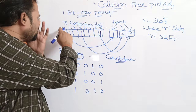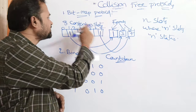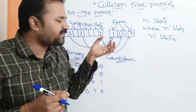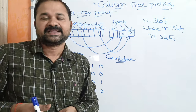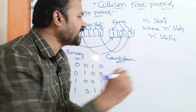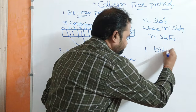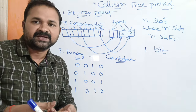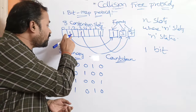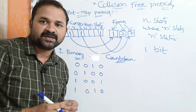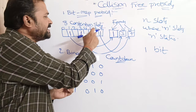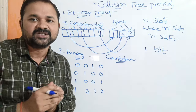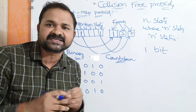The numbering is from 0 to n minus 1, so the 7th slot corresponds to the 7th station. Suppose a station wants to send a frame — it has to transmit a 1 bit in the corresponding slot. For example, if station 1 wants to transmit a frame, it transmits a 1 bit in the first slot. Stations 0, 2, 4, 5, and 6 don't want to send any frames, so we put 0 or leave those slots empty.